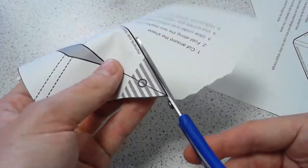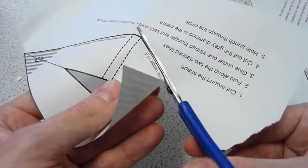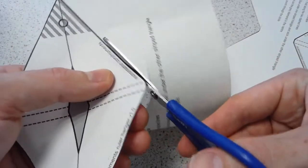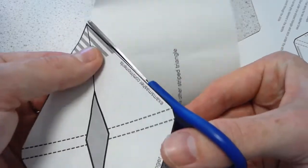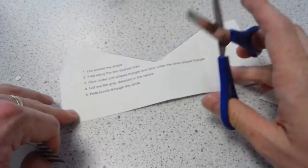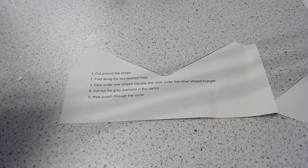What's slightly more important is the quality of your folding and your hole punching in a moment. So we'll cut around the shape. That's step one: cut around the shape. Step two is to fold along the two dashed lines.